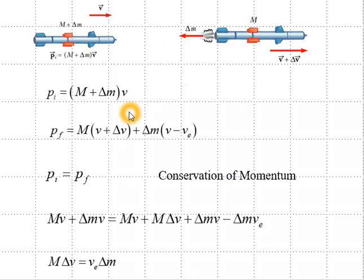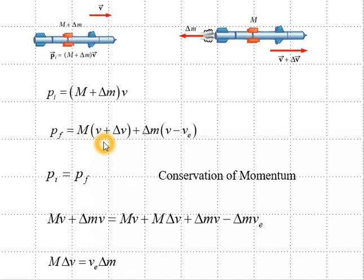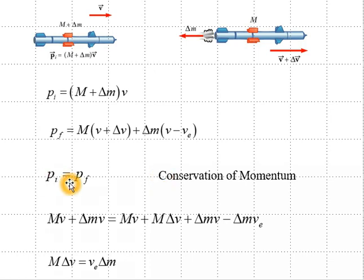The initial momentum of the rocket is M plus delta M times V. The final momentum of both the rocket and the fuel will be the mass of the rocket times the increased speed, plus the mass of the fuel times the speed of the fuel relative to the ground, which will be V minus the exhaust speed of the fuel. We apply conservation of momentum: the initial momentum is equal to the final momentum, and we expand the terms.